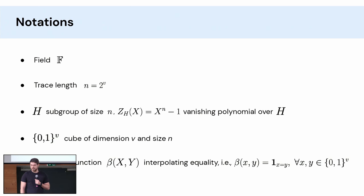So let's get some notations out of the way. I'm gonna work over a field F large enough for security. I'll have traces with length n, a power of 2. I'm assuming that F has a subgroup multiplicative subgroup H of size n with vanishing polynomial over H. This set {0,1}^v I'm gonna call the cube of dimension v and I'm gonna use this multilinear function beta which interpolates the equality over the cube. So beta(x,y) is 1 if and only if x equals y.